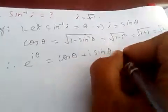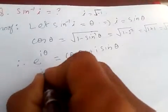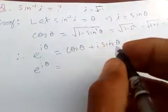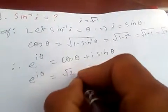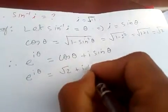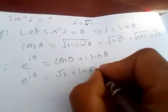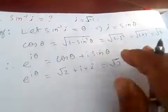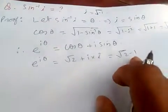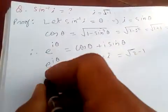So e to the i theta is equal to cos theta, which is root 2, plus i into sine theta, which is i. So this gives root 2 minus 1.